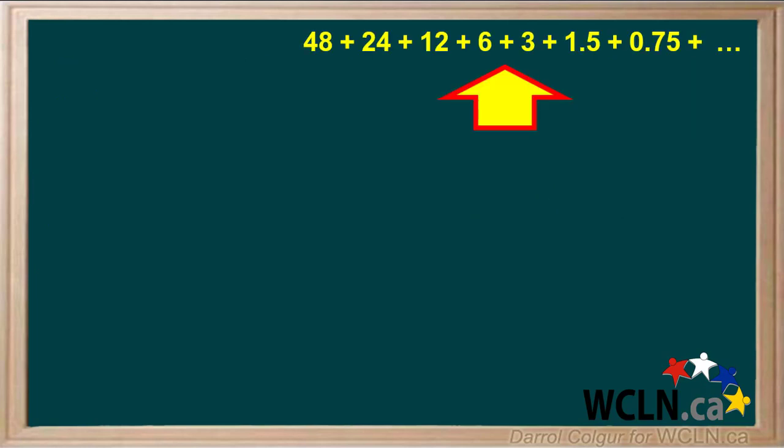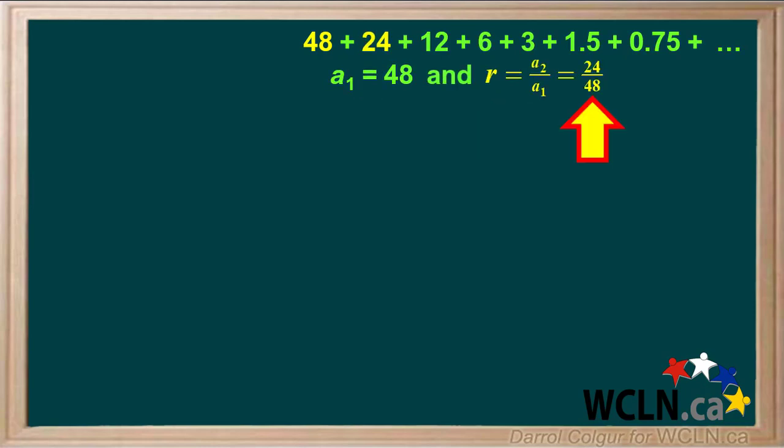Now we'll consider a geometric series for which R is less than 1. We can see that term A1 equals 48, and R equals A2 over A1, or 24 over 48, which is 0.5. Notice the terms keep getting smaller and smaller.